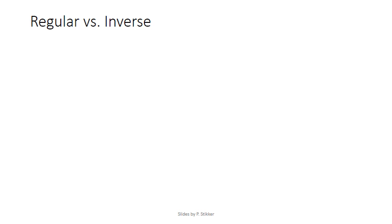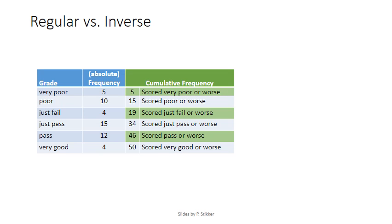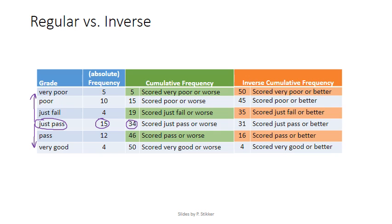Let's have an example to understand these definitions. Fifteen students scored a just-pass, which has a frequency of 15 and a cumulative frequency of 34. The 34 can be interpreted as the number of students who had a just-pass or worse. The inverse is the exact opposite, so it's the value or better. The inverse cumulative frequency shows that 31 students scored a just-pass or better.